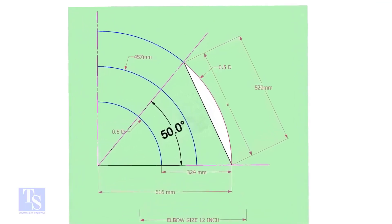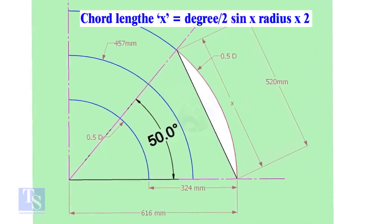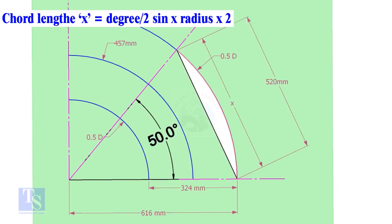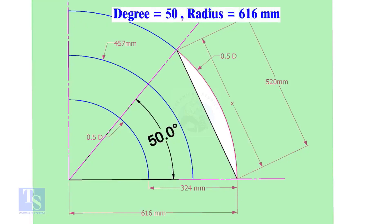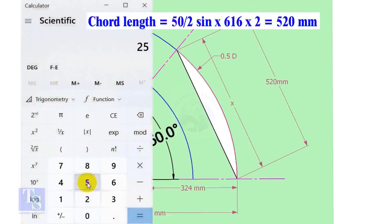Let us calculate the cord length for 50 degrees of the outer arc. Cord length x equals half-degree sine multiplied by 2 times the radius. Here the degree is 50, and the radius is 616 millimeters. Cord length equals sine of 25 degrees multiplied by 616, multiplied by 2, equals 520 millimeters.